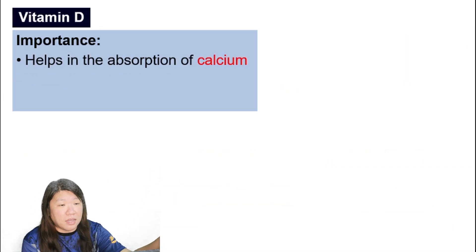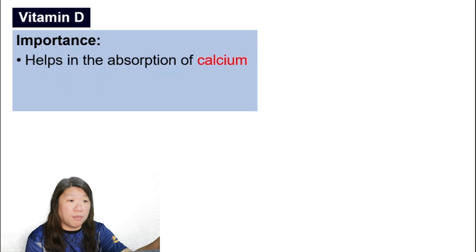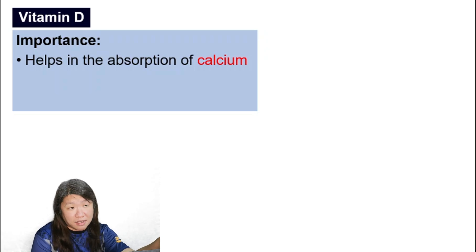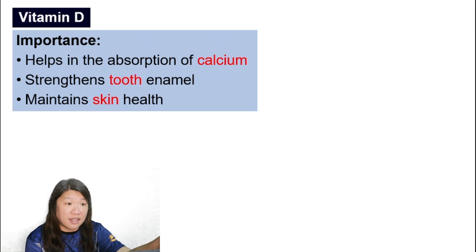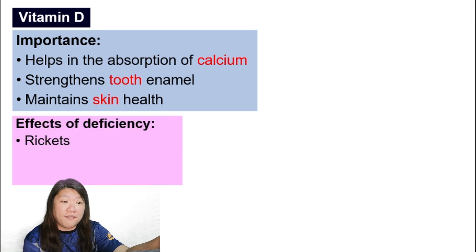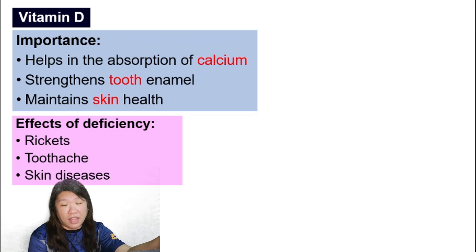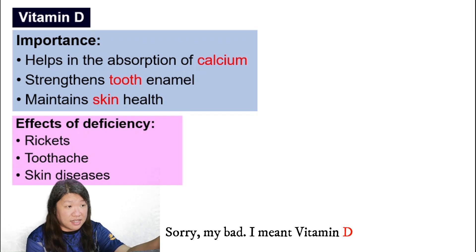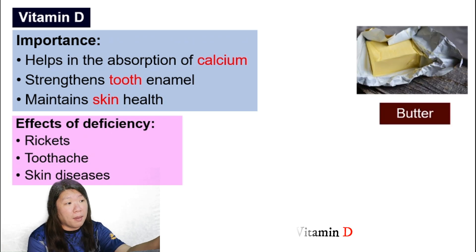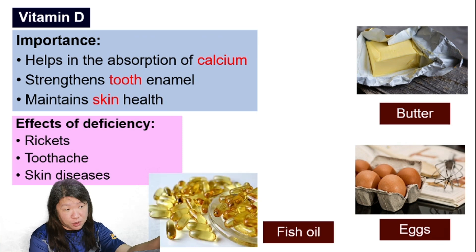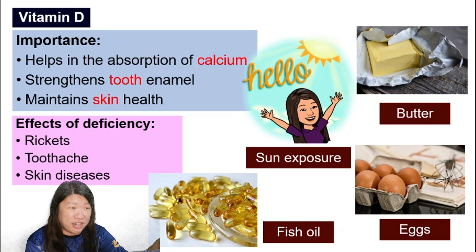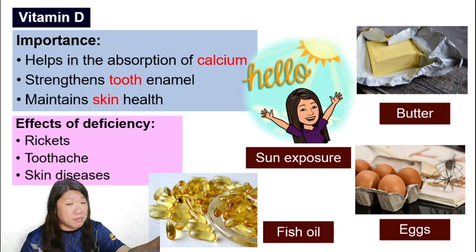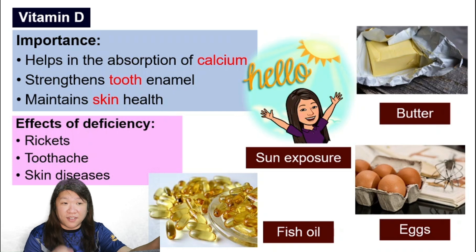Vitamin D is important for helping in the absorption of calcium, strengthening tooth enamel, and maintaining skin health. If we do not have enough, it can cause rickets, toothache, and skin diseases. Sources of vitamin D include butter, egg, fish oil, and also sun exposure — just going out in the morning sunlight allows our body to generate vitamin D.